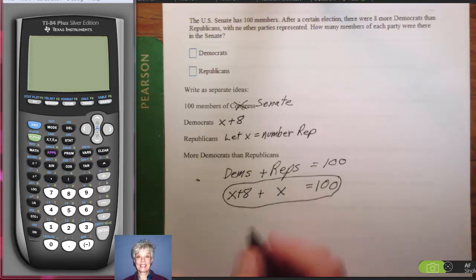So, that's really all the information we have. Now, I'm going to add like terms. 1X plus 1X is 2X. So, I'll have 8 plus 2X equals 100.